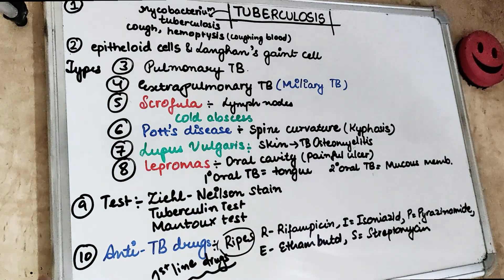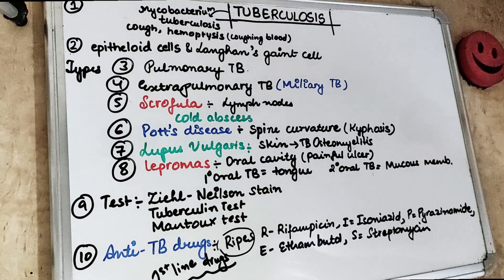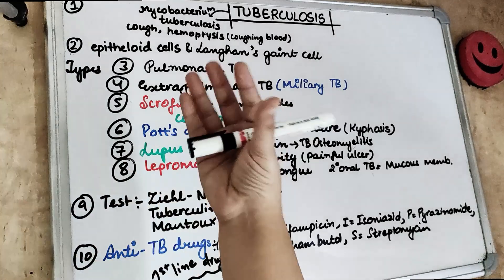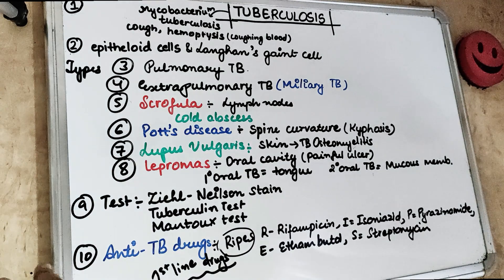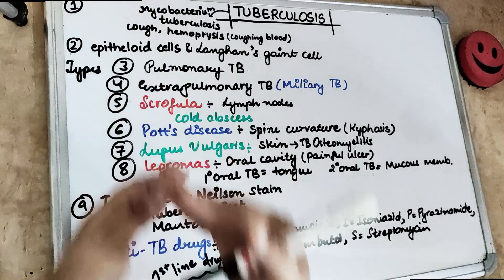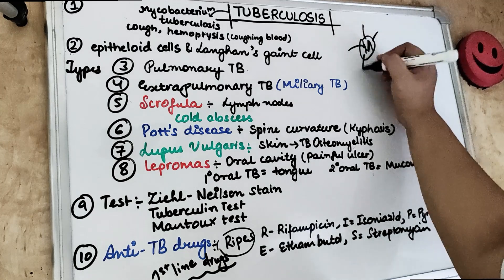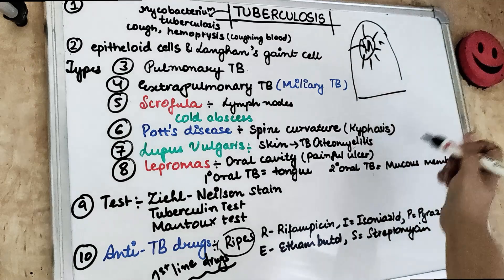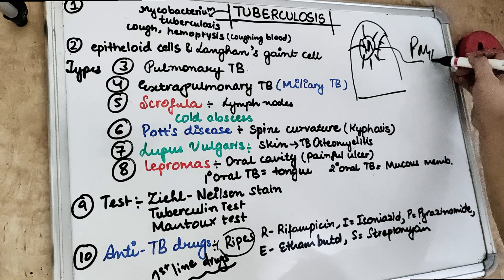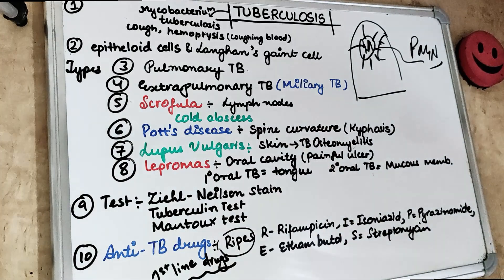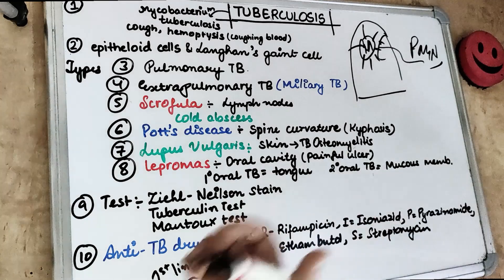Once you are exposed to Mycobacterium tuberculosis, the bacteria will go inside your body and reach your lung tissues. An inflammatory reaction starts. Neutrophils automatically rush towards the Mycobacterium tuberculosis in the lung tissues. However, this Mycobacterium tuberculosis destroys the PMNs — the neutrophils.